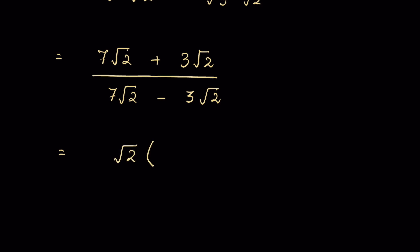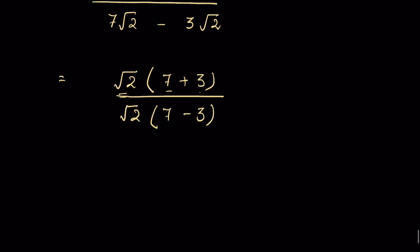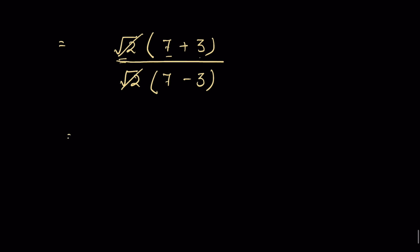Taking √2 common, we write (√2(7 + 3)) / (√2(7 − 3)). The √2 cancels, leaving (7 + 3) / (7 − 3) = 10/4. Dividing both by 2 gives us 5/2. That is the answer from the first method.